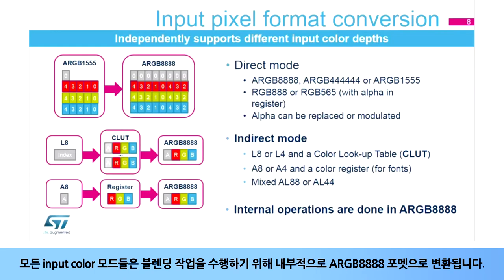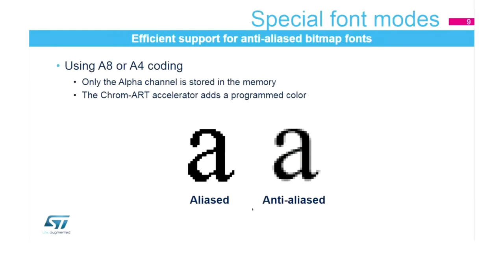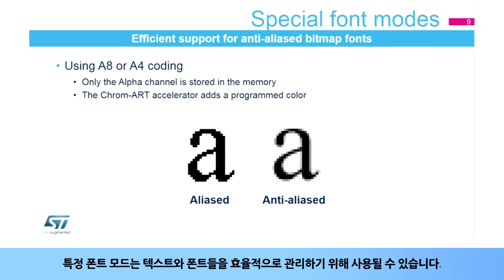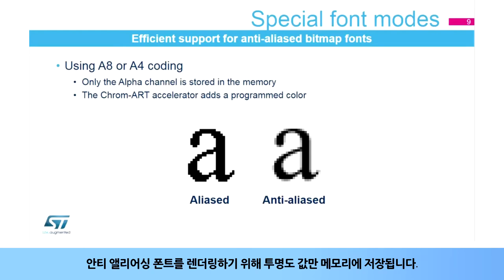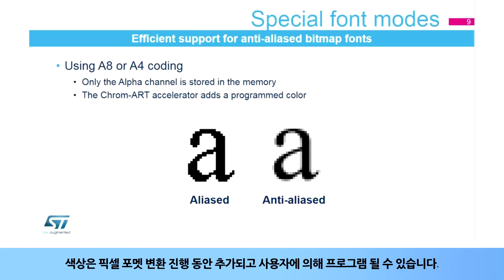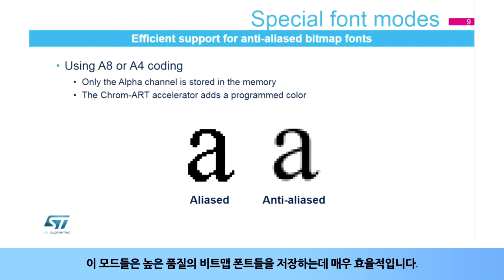All input color modes are transformed internally into ARGB 888 format to perform the blending operation. Specific modes can be used to efficiently manage texts and fonts. Only the transparency value is stored in memory for rendering anti-aliased fonts. The color is added during the pixel format conversion process and can be programmed by the user. These modes are very efficient for storing high quality bitmap fonts.